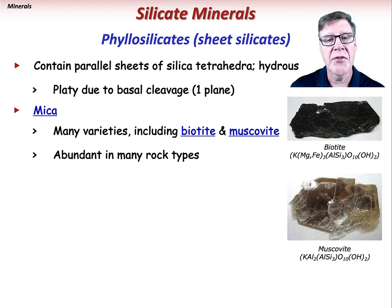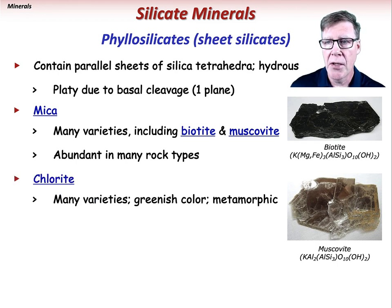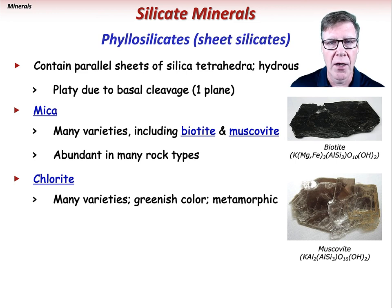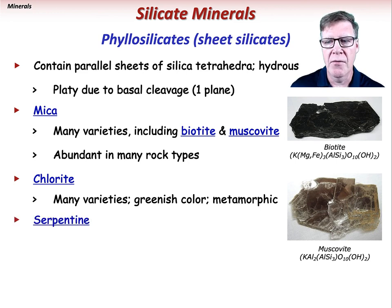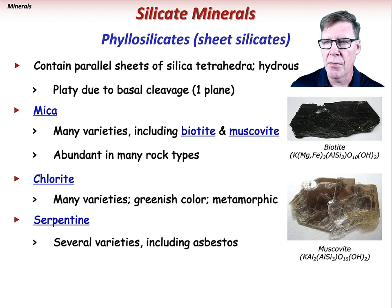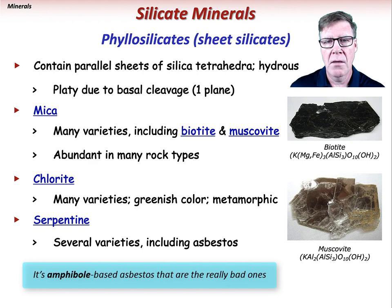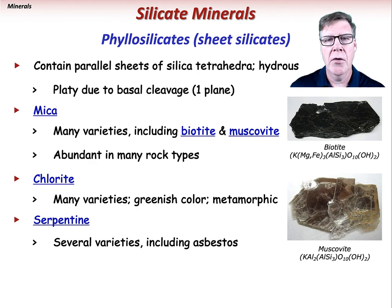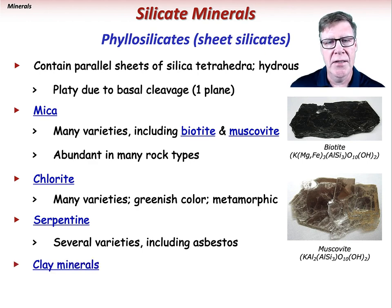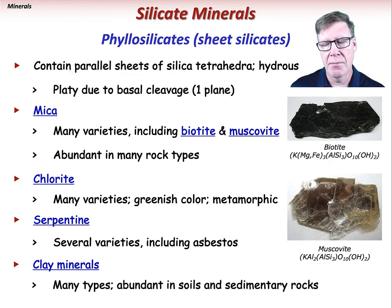There are also many varieties of chlorite, which is typically greenish in color and very common in metamorphic rocks. Serpentine is a group of several different minerals that include different varieties of asbestos. Finally, there are numerous types of clay minerals, which are abundant in soils and sedimentary rocks.